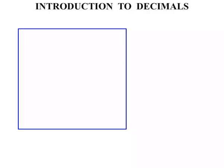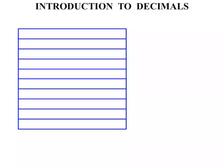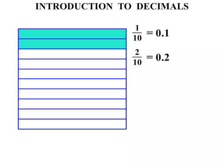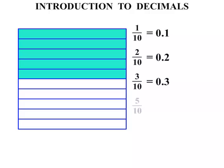Let's consider if we have one whole and break it up into tenths — 10 equal parts. If we shade in one of them, that's one-tenth, and in terms of a decimal that is equal to 0.1. Here we have two-tenths, and as a decimal that is written 0.2. Three-tenths — did you say 0.3? It's not too hard. I've shaded in five there, so that's five-tenths, and that's 0.5.